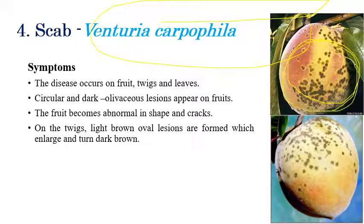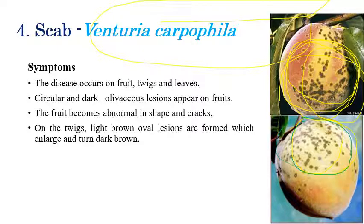For scab, the major symptoms on fruits are dark circular olivaceous spots. The name itself indicates scab — olivaceous spots can be seen on the fruits. Infected fruits are also irregular in size compared to healthy fruits. Light brown color discolorations can be observed on twigs as well, but the major symptoms are on fruits since olivaceous lesions on fruits reduce their market value.